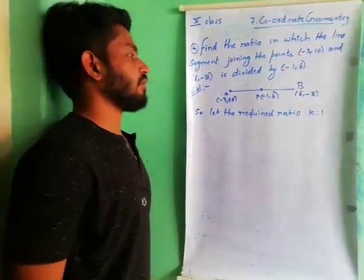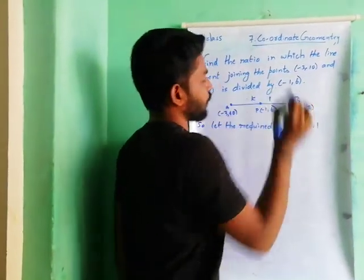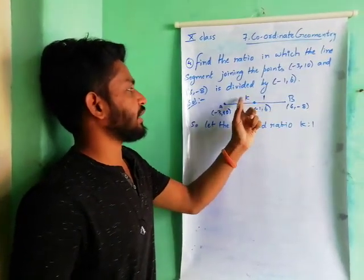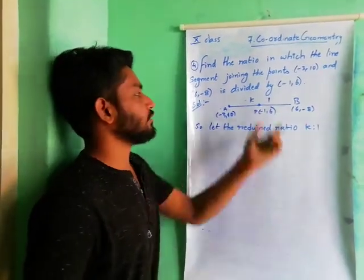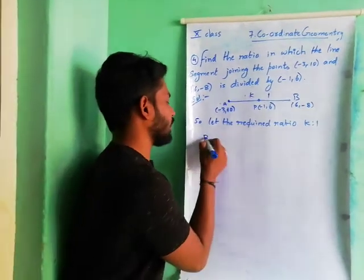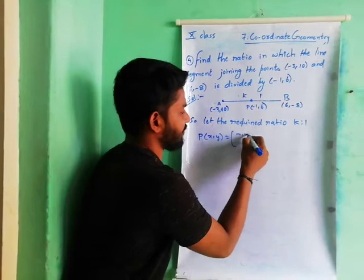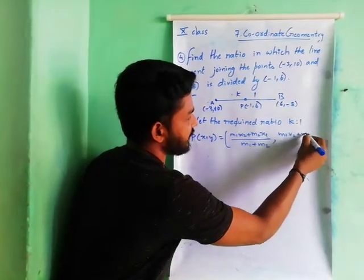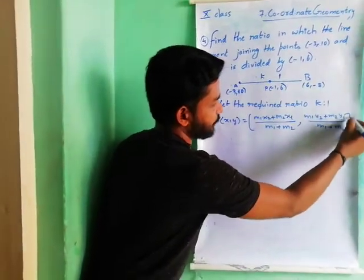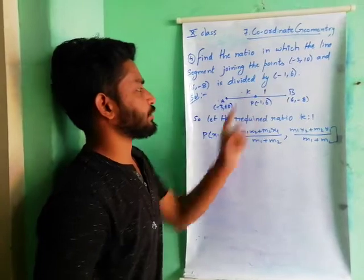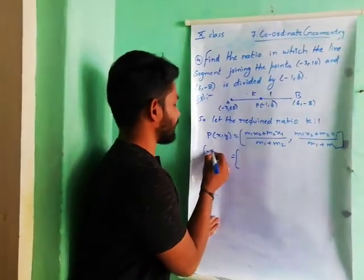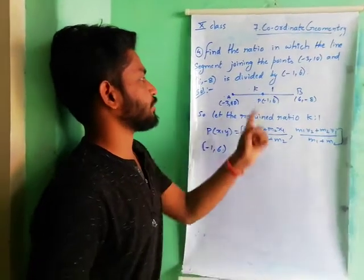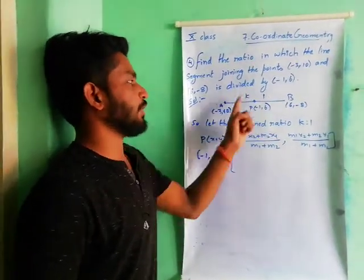So if the ratio is not given, always consider the ratio in the form K:1. Let us suppose point P divides AB in the ratio K:1. By using the section formula, P(x, y) = (M1·X2 + M2·X1)/(M1 + M2), (M1·Y2 + M2·Y1)/(M1 + M2). Here M1:M2 = K:1. The point P is already given as (-1, 6), and the points A and B are also given. We have to find the ratio in the form K:1.